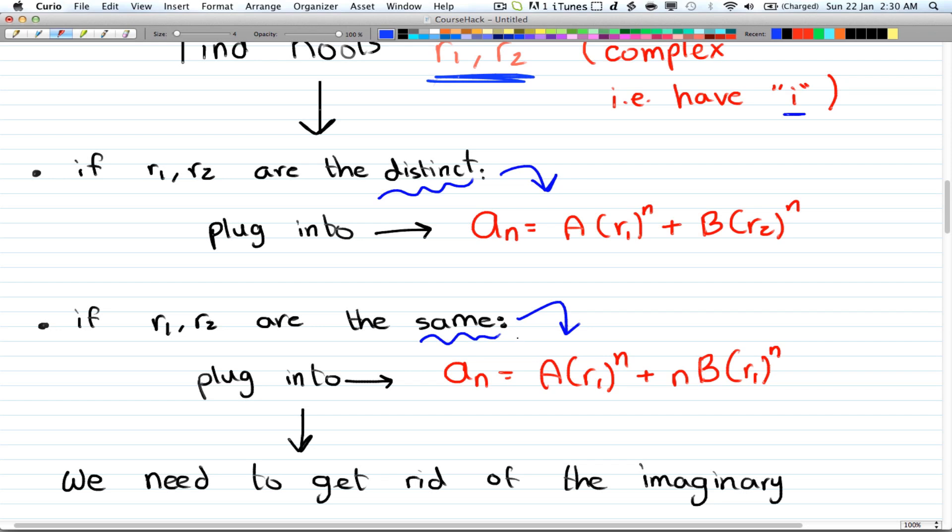And it's exactly the same formula from the previous two videos. So if it's distinct, you're going to have a_n = A(r₁)^n + B(r₂)^n, which is the second root to the power of n.